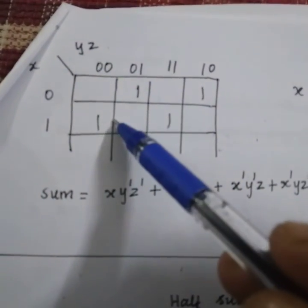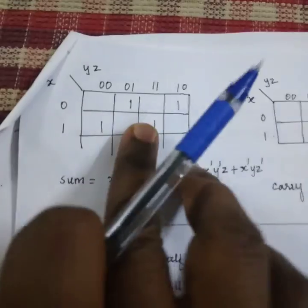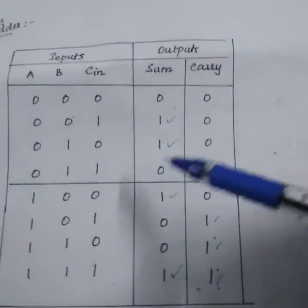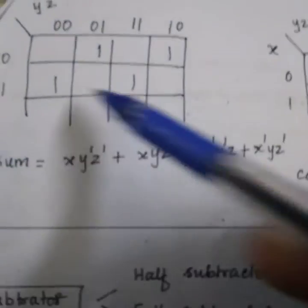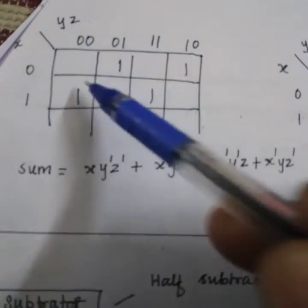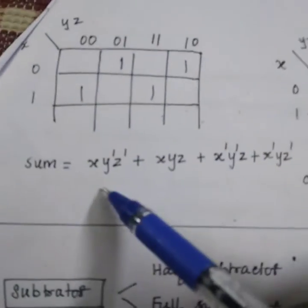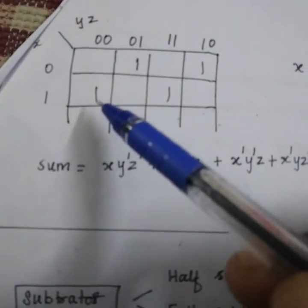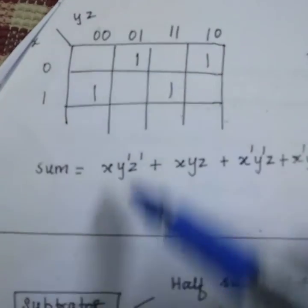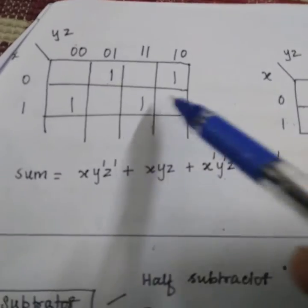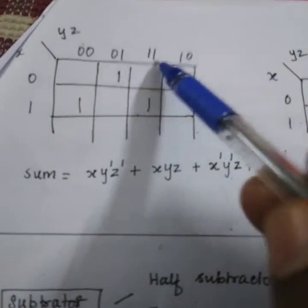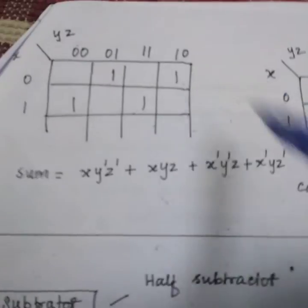This is for sum, and this is for carry. After putting all the ones, similar ones here, this is a normal K-map procedure. The sum will be like this. No pairing can be done, so we need to write everything as it is. This is x y' z'. Next one: x' y' z. Next one: x y z. And the last one is x' y z'.